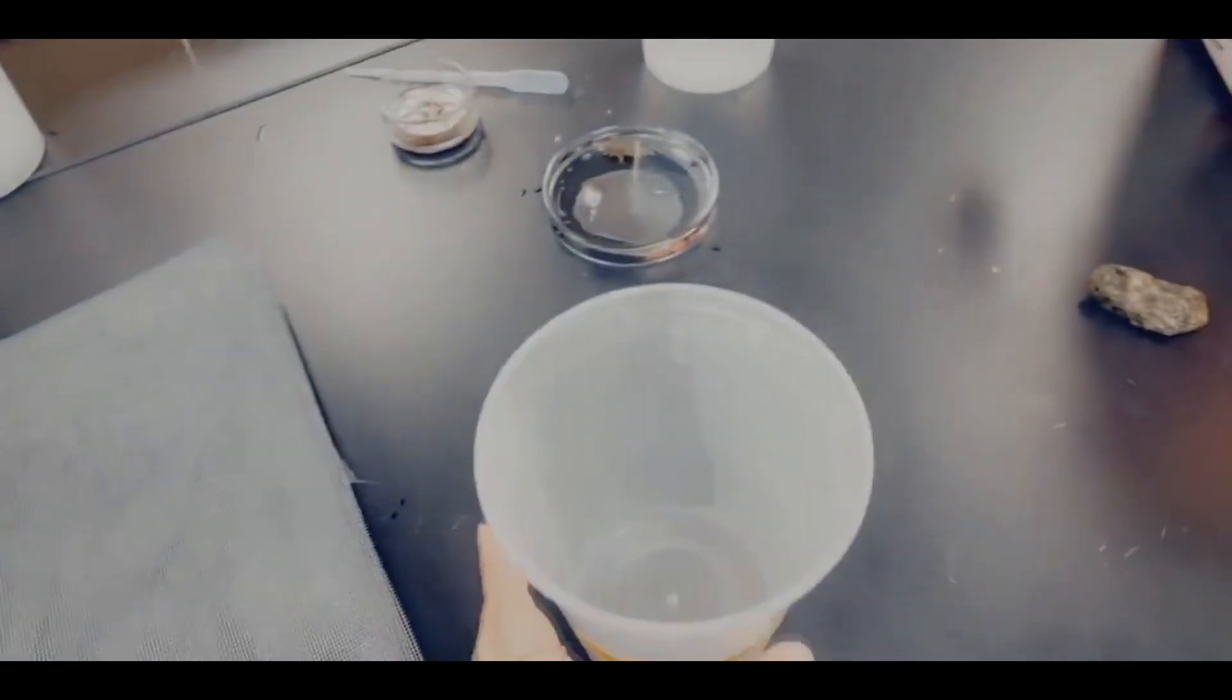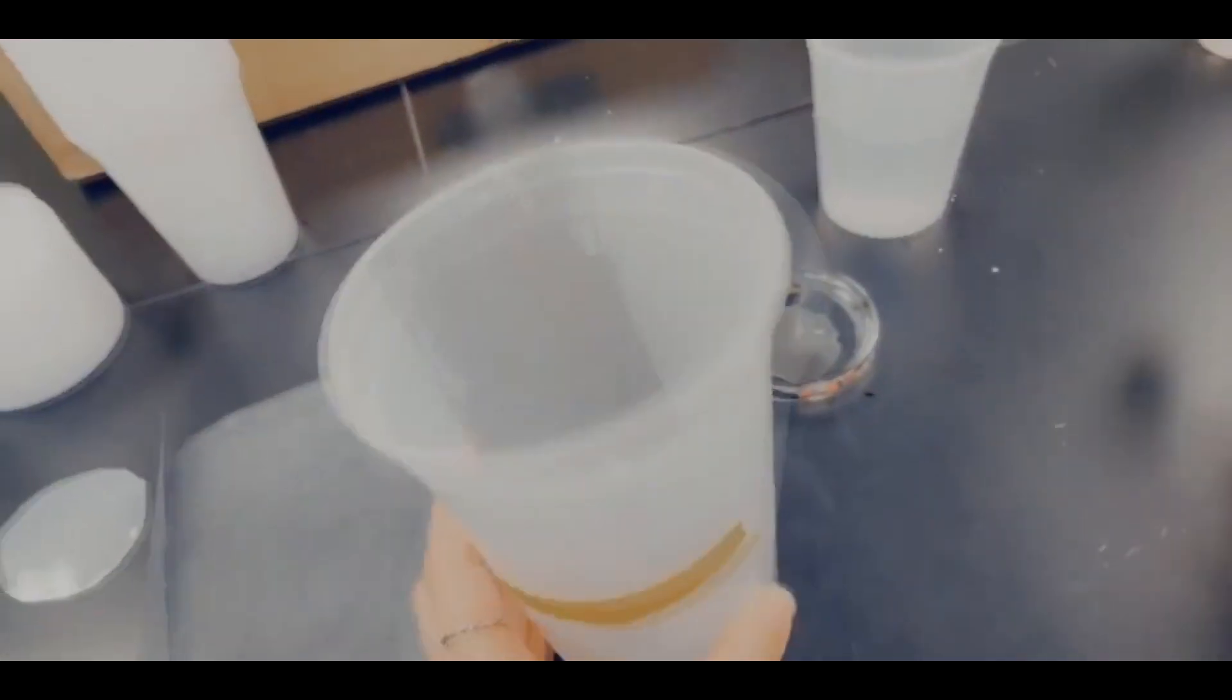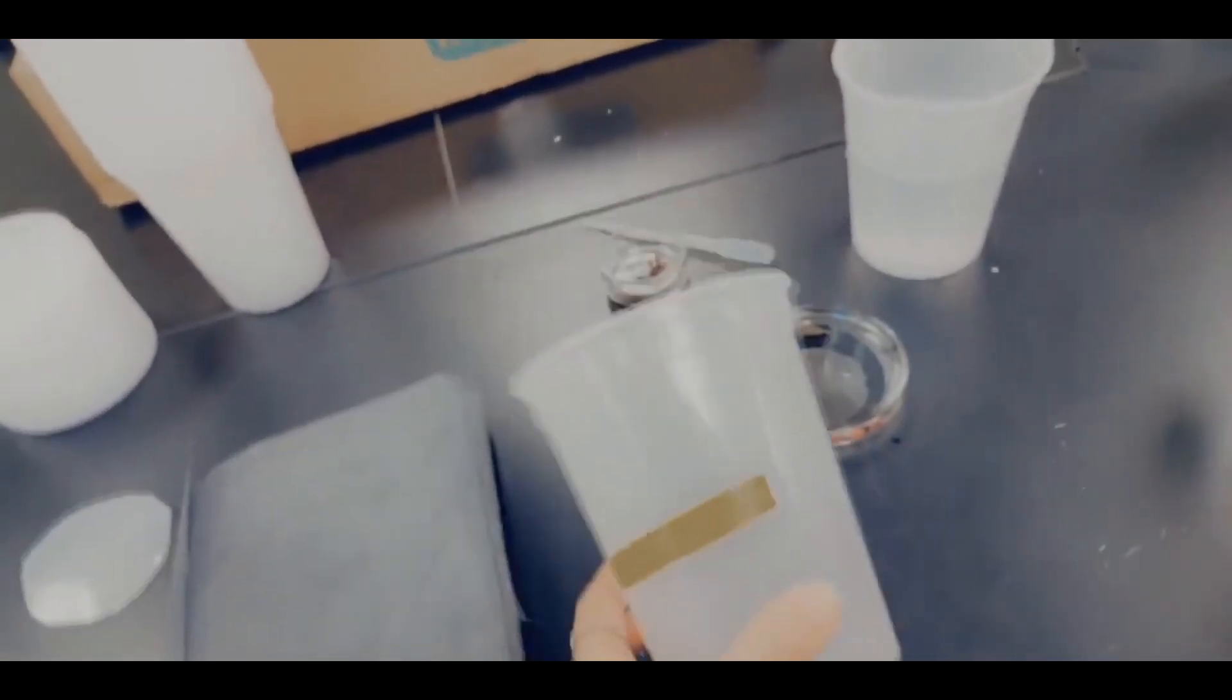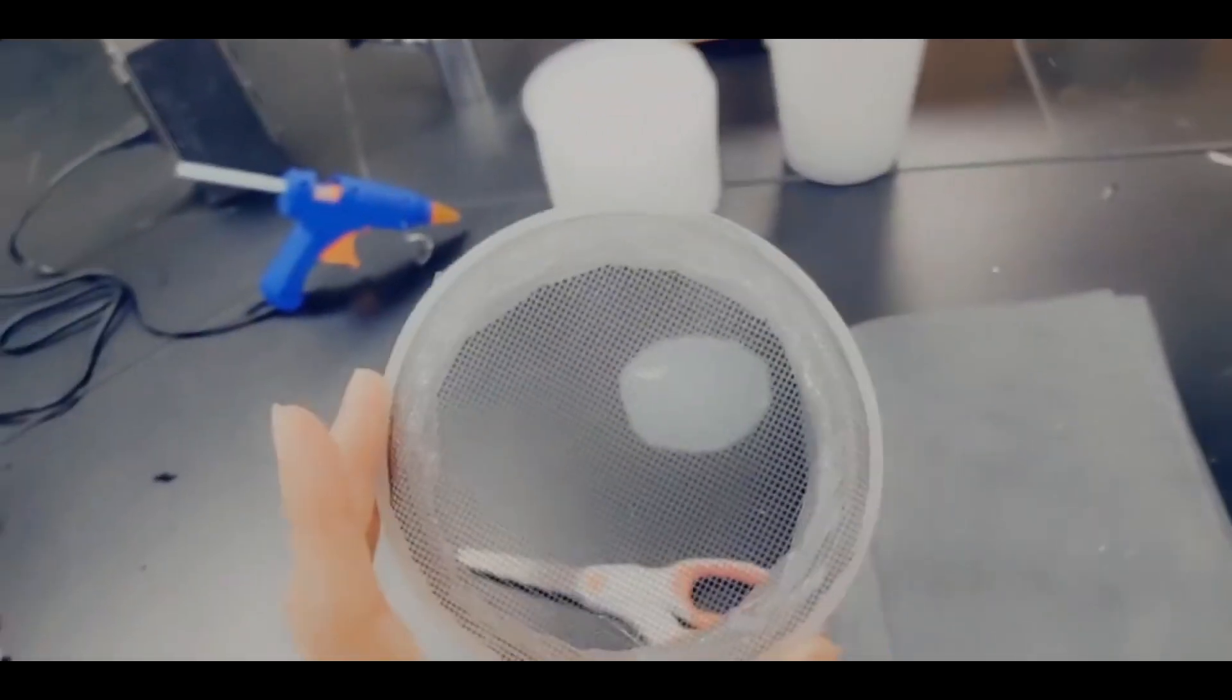Once you have your container all set up, you have whatever plastic, metal, glass container you're going to put your nymph in. And you have some window screen inside of it. And you have a cover, ideally, with window screen or some sort of mesh.